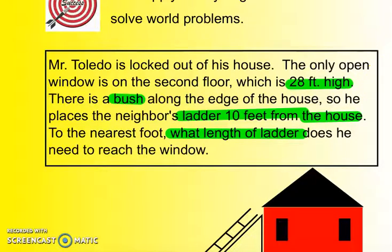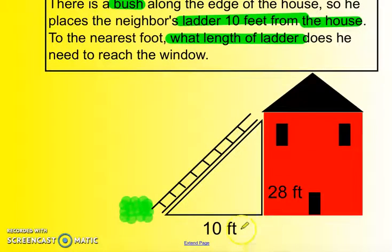Below, here's my drawing. Here's the window, 28 feet high. The bush is 10 feet from the house. I put the ladder right where the bush is. Then I kind of finish it off as a triangle, because if I draw the ladder up to where the window is, it creates a triangle.